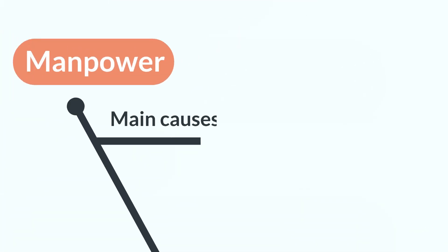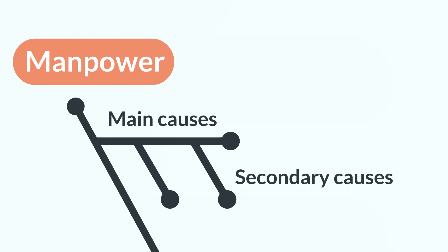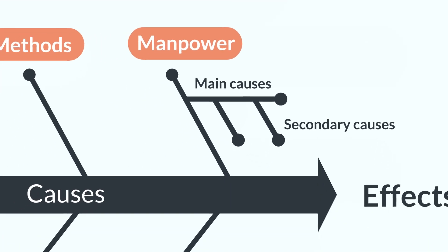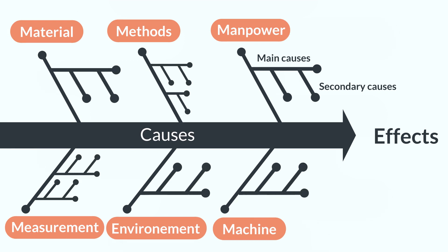In each category, we find one or more of the main causes. Those ones are formed by secondary causes. This composition is found in every category. This representation allows us to find and to better understand the causes of effects.